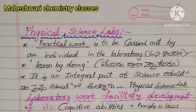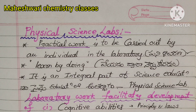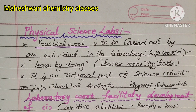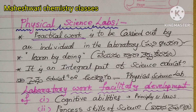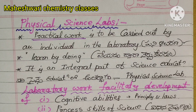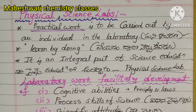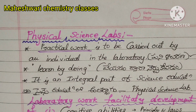Hi and welcome to Maheshwari Chemistry Classes. This is the topic of physical science labs. We will discuss the laboratory types of physical science labs. The definition of the physical science lab and the objectives of the laboratory were explained in the previous class. The link is provided in the description box. This is part 3. Please subscribe to my channel and share with your friends.